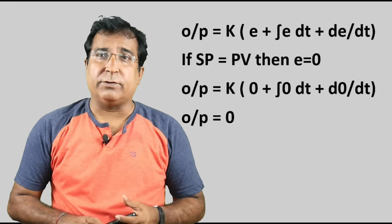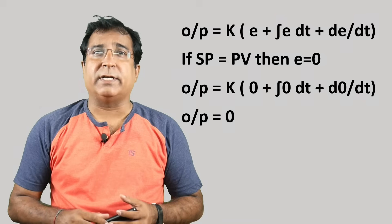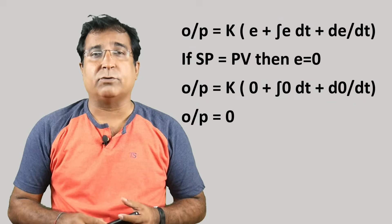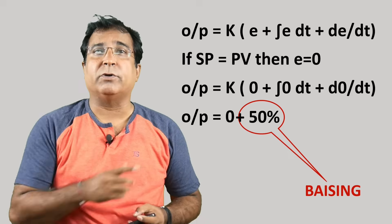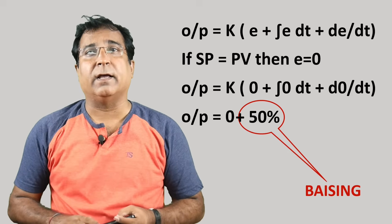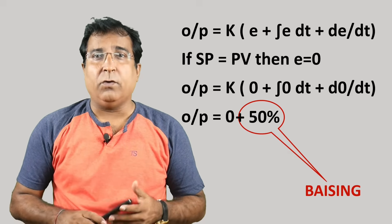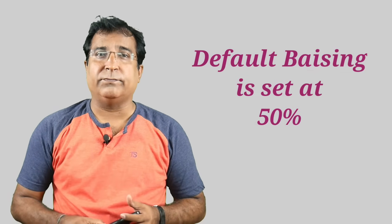The control valve must be open to match setpoint and process value. Generally a controller is designed in ideal condition to operate at 50% control valve position when process value and setpoint matches. So a 50% biasing is added in PID output equation in case when error becomes zero. However you have option to change biasing from faceplate. Default is set to 50%.